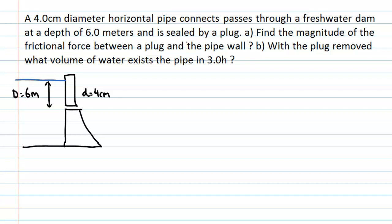Initially, the pipe is sealed by a plug. I'll zoom in on the pipe and draw in the plug. In part A, we want to find the frictional force between the pipe wall and the plug that holds it in place. In part B, we'll take the plug away, water will spill out of the hole, and we'll find how much water spills out.